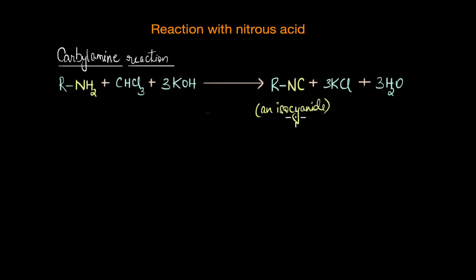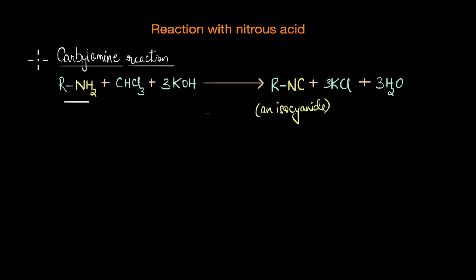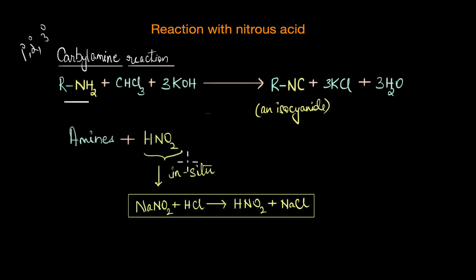In the previous video we talked about the carbylamine reaction, which is a classic tool used to detect the presence of primary amines in a given sample. In addition to the carbylamine reaction, we also have a couple of other reactions that can identify and classify the different types of amines — primary, secondary, and tertiary. One such reaction is the reaction of amines with nitrous acid, where nitrous acid is prepared in situ by the reaction of sodium nitrite with a mineral acid like HCl.